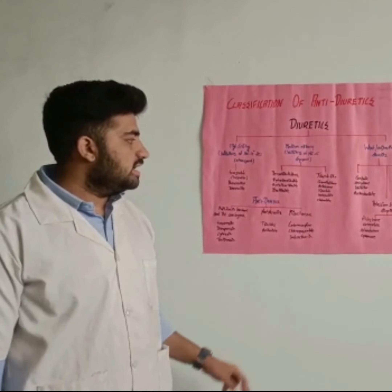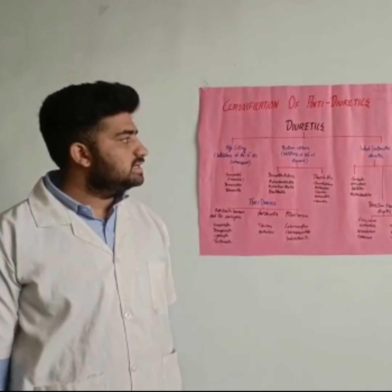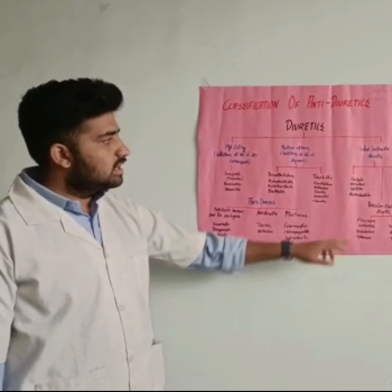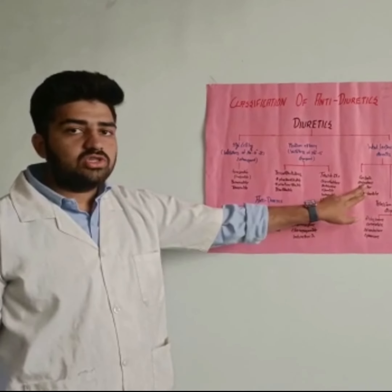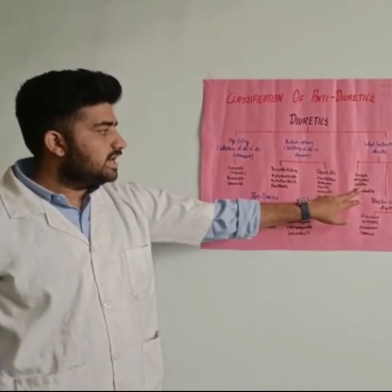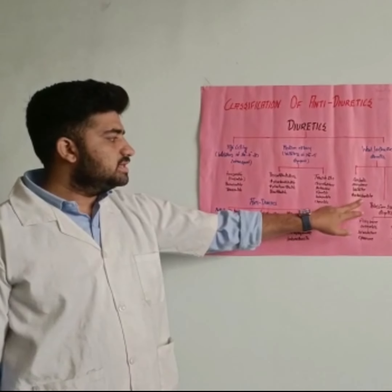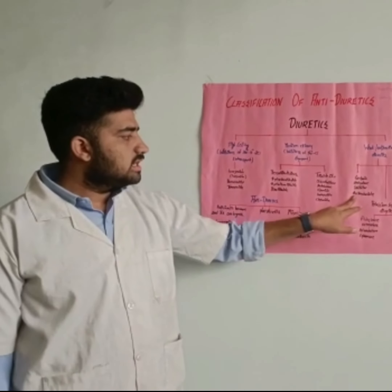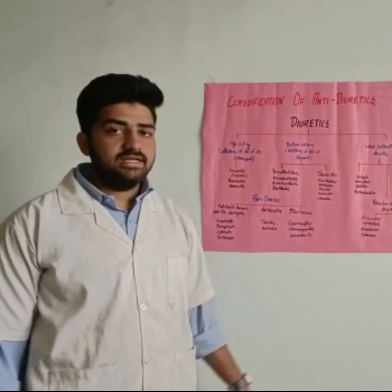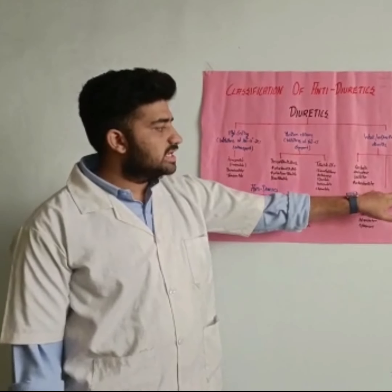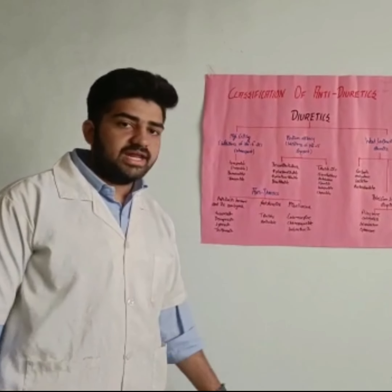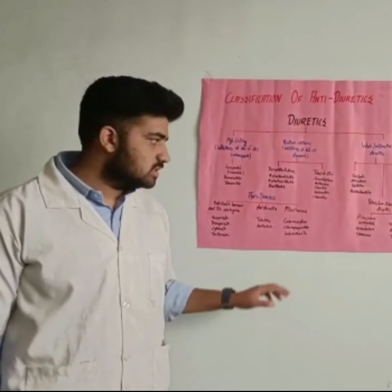Thiazide-like agents also include indapamide and clopamide. Weak diuretics: carbonic anhydrase inhibitors are acetazolamide. Osmotic diuretics are mannitol and glycerol.